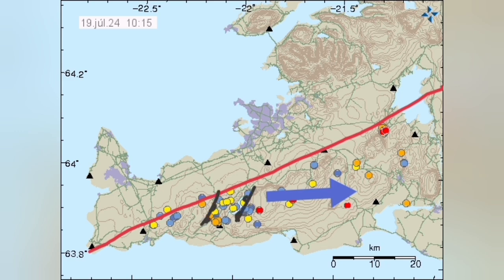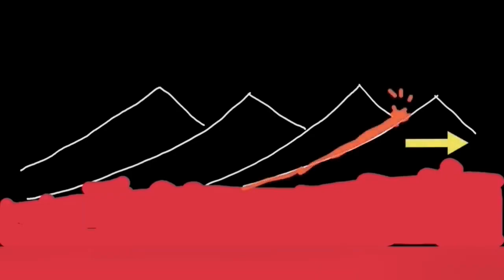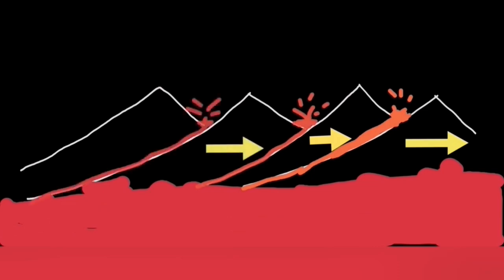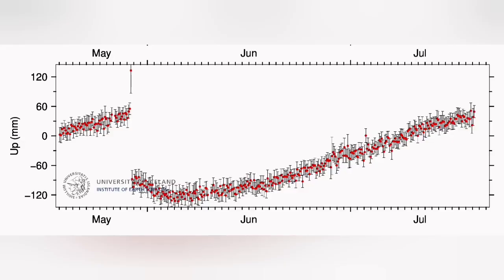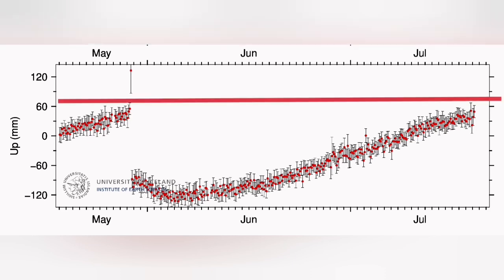As it moves and pulls, it practically rips the ground — the earth's crust — and creates what we call a rift. This rift is the location of these eruptions. Over time, as the rift moves from one point to the next, eruptions happen in sequence — from the first to the second and the third. These are the volcanic systems in that area.